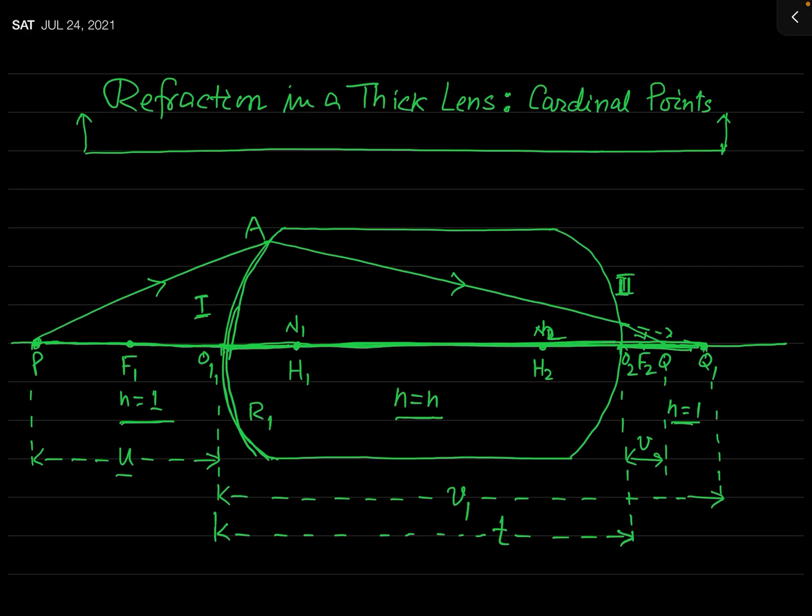After two lectures on refraction in a thick lens, we are now able to find the thick lens formula. The thick lens formula gives the expression for the focal length of a thick lens. In the earlier lecture we obtained the principal focal length, but that was measured from the poles. In a thick lens, the focal length is measured not from the poles of the surfaces but from the principal points.